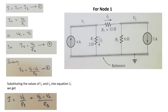Now we have to apply KCL to node 1. From the figure, you will see that the current I is entering that node, I1 is leaving that node, and I3 is also leaving that node. So the KCL equation can be written as: I is equal to I1 plus I3. Put that as equation number 1.